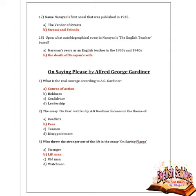After Engine Trouble, we move to the next prose writing: On Saying Please by AG Gardiner — Alfred George Gardiner. First question: what is the real courage according to AG Gardiner? Given options are course of action, boldness, confidence, and leadership. Option A is correct — course of action is the real courage according to AG Gardiner.